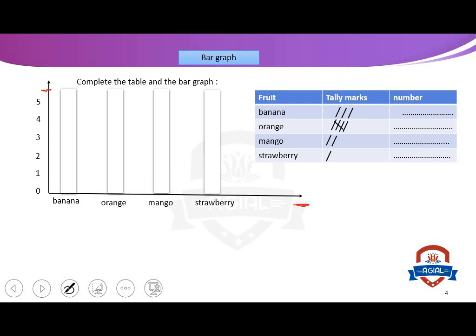He gave me some fruits: banana, orange, mango, strawberry. Banana, orange, mango, strawberry. And he gave me tally marks, and asked me to complete the table first and then the bar graph. Complete the table with me.